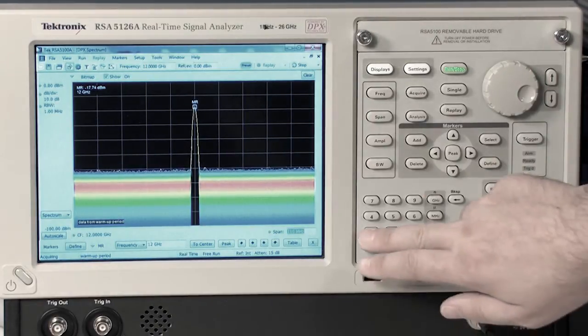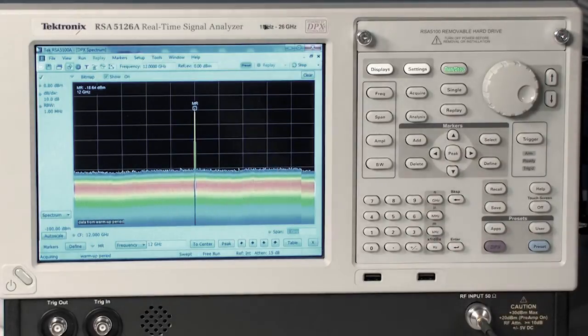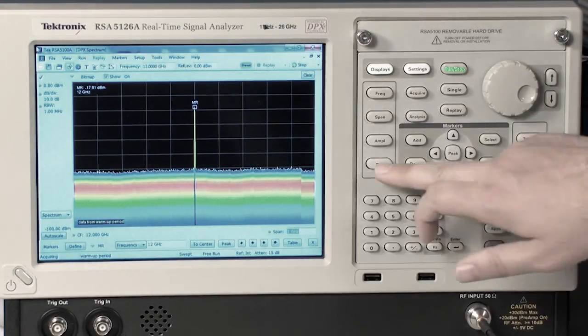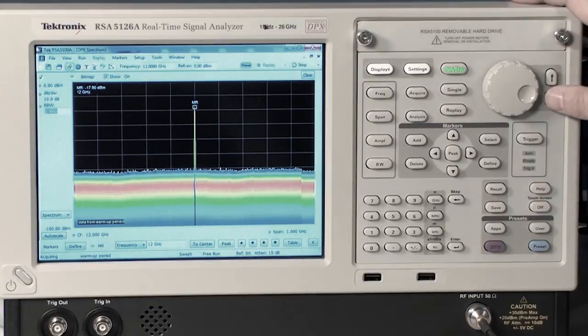What I can show is a 1 gigahertz span. Now, with a 1 gigahertz span, I'm still using the DPX real-time live update display where I can see the live RF of this measurement. And you'll notice there are no spurs to be seen. I have full control of the resolution bandwidth, so I can lower the resolution bandwidth to try to see lower into the noise.